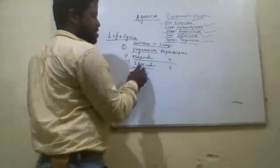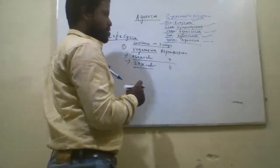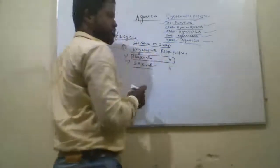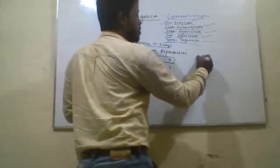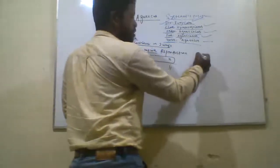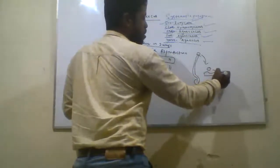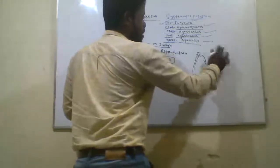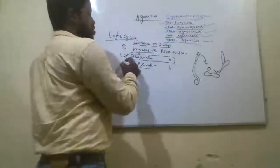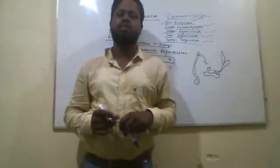Vegetative reproduction takes place by fragmentation. Asexual reproduction may occur rarely — it takes place by development of a terminal spore which detaches, lands on a suitable substratum, and germinates to form a mycelium structure. However, asexual reproduction is not common in Agaricus.